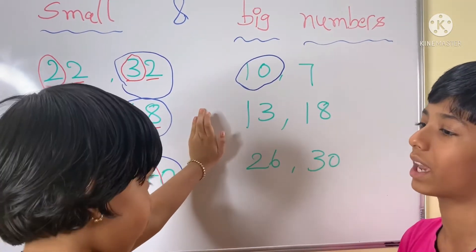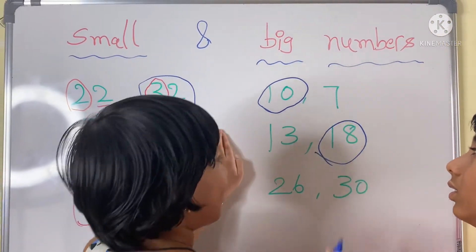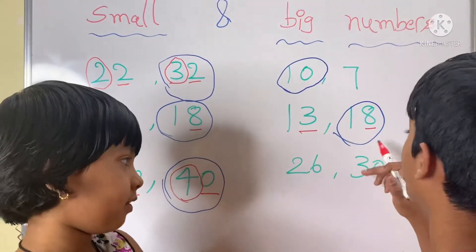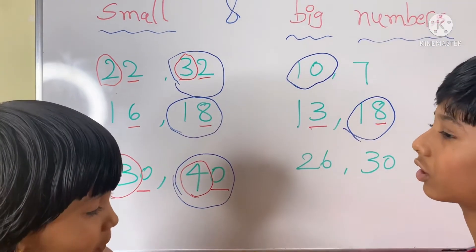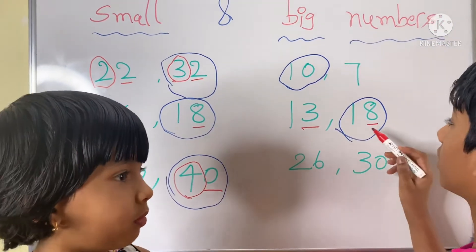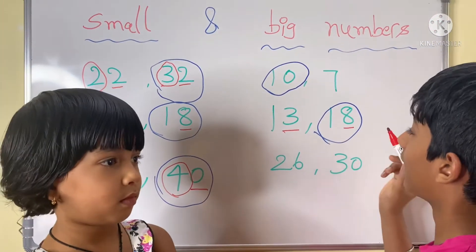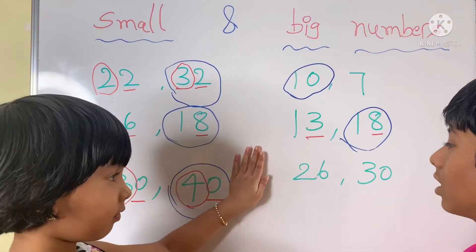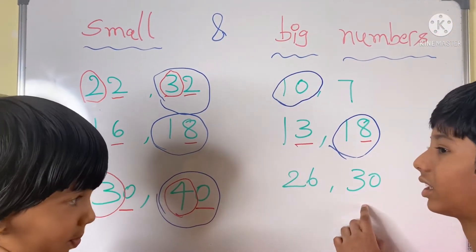13 and 18 — which is the big number? Eighteen. Why? In the ones column, 8 and 3 are different. So 3 is lesser than 8, and 8 is greater than 3. So 18 is big.